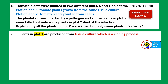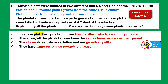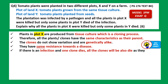We have to compare the plants in plot X, grown from the same tissue culture, and plants in plot Y, planted from seeds. Plants in plot X are produced from tissue culture, which is a cloning process. Therefore all the plants or clones produced have the same characteristics as their parent and are genetically alike. The clones do not show variation, meaning they also have the same genetic resistance towards a disease. If there's an infection and one clone dies, all the clones will have a similar resistance and will all die as they have the same resistance.